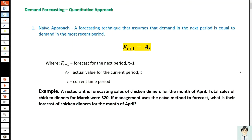So the naive approach means that whatever was the forecast last period, that will be the forecast for the recent period as well. Okay, so for example: